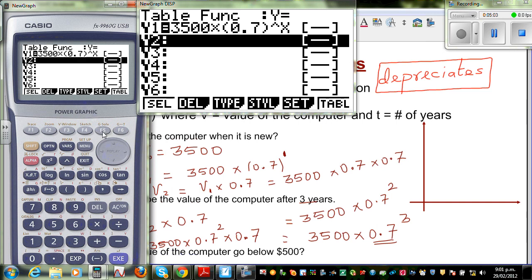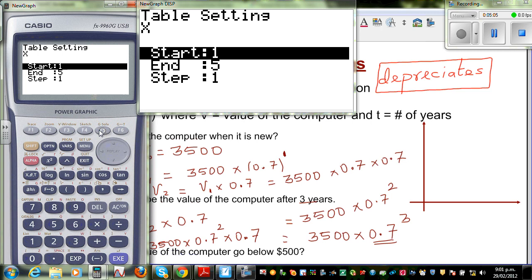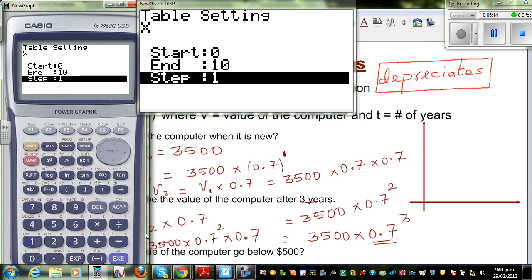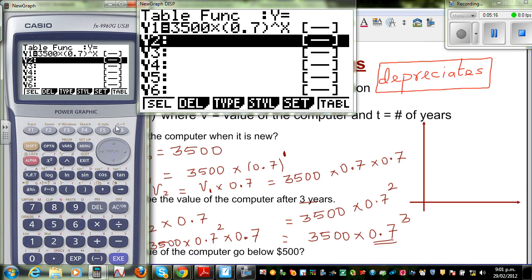And you set, press F5, which is set. So they're asking you where do you want to start. So I want to start at 0 years, and I want to finish at 10 years. And go execute, and then go to table.